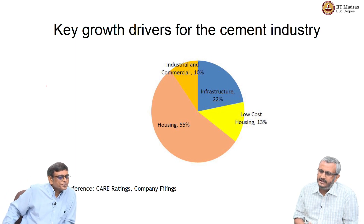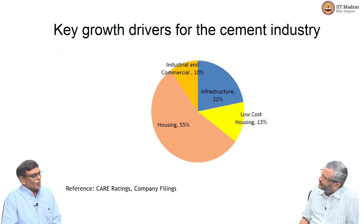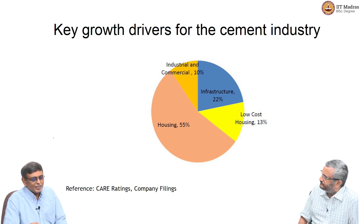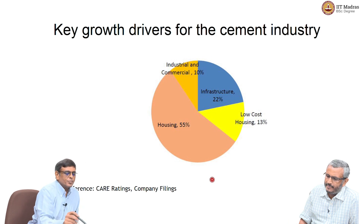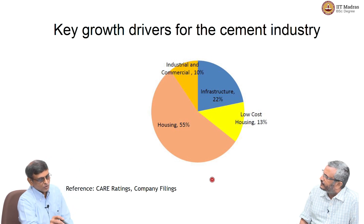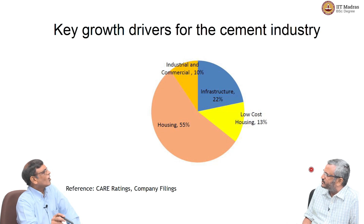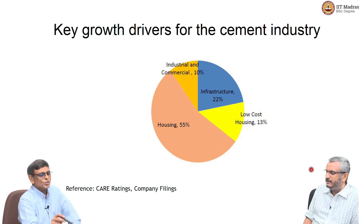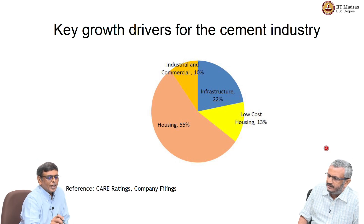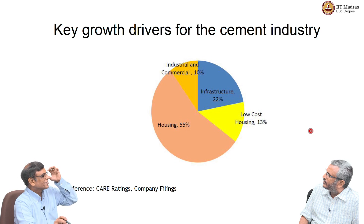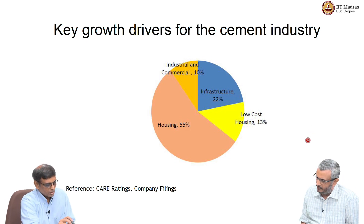If you have to do an industry-level analysis, what are the data sources you should look at? One is rating agencies like CARE and CRISIL. You could also get data from general agencies and industry associations — for example, FICCI, CII, ASSOCHAM. There will be industry associations that keep generating reports. For IT, it will be NASSCOM. You also have world bodies which keep generating reports on different countries and different sectors. There are many sources for this.